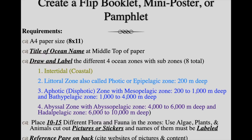You need at least ten different plants or animals in the zones. You can cut out little pictures, but they actually have to tie in with that certain area of the zone — you can't just put random animals throughout. You have to make sure they belong in that ocean and they belong in that zone.